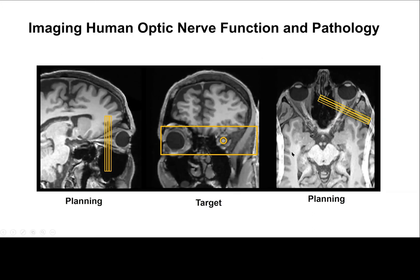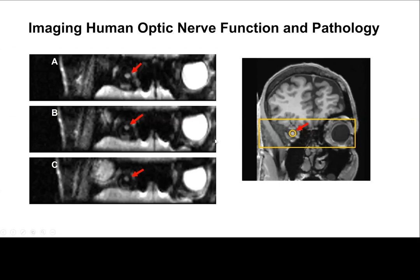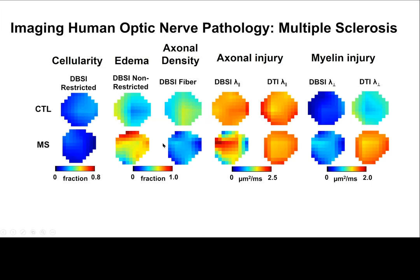We then tried to translate this to humans. In a human, we do anatomic imaging to identify where the optic nerve is, ensuring we image the cross-section perpendicular to the nerve repeatably. We perform careful planning and reduce the field of view to focus on where the optic nerve is. This is necessary because diffusion MRI requires echo planar imaging, which is very susceptible to multiple artifacts. By reducing the field of view, we can clearly see these nerves and then perform DPSI modeling.